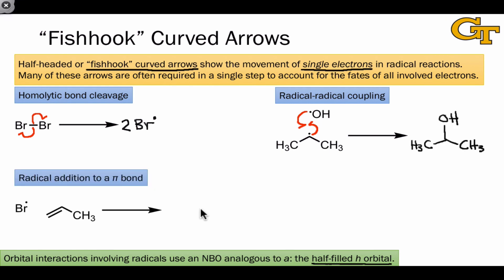Radical additions to pi bonds are also possible, and this is somewhat analogous to the addition elementary step, but requires a few more arrows, since we need two arrows to show the formation of the new single bond, and an additional third arrow to show the fate of the other electron involved in the pi bond. Notice that the product here contains a new sigma bond, in this case between bromine and carbon, and a new radical has been created. In essence, the radical character has shifted from the bromine radical onto one of the carbons of the alkene.